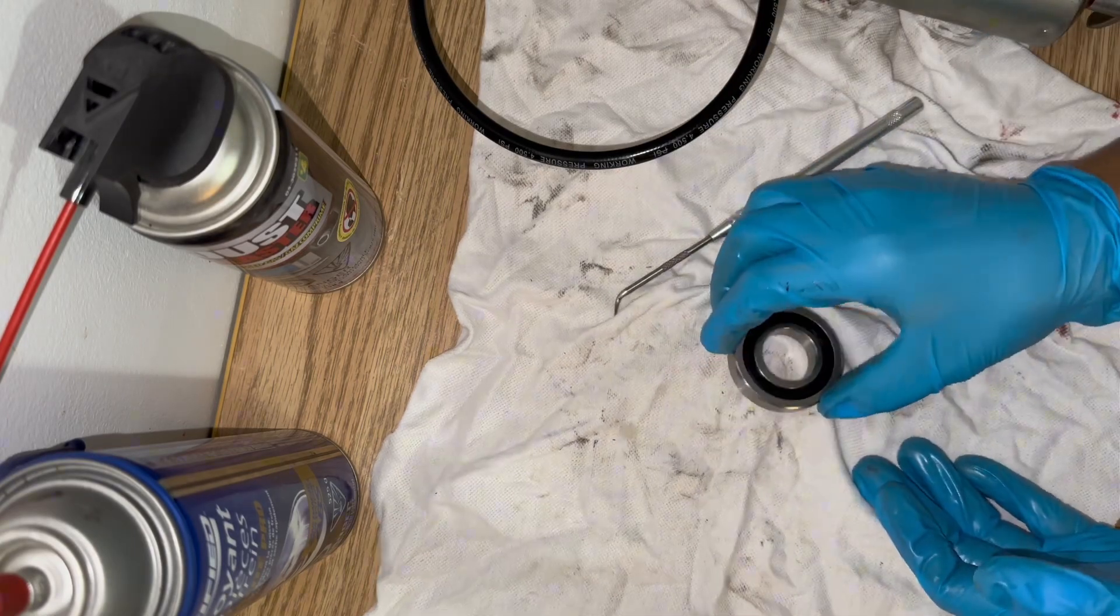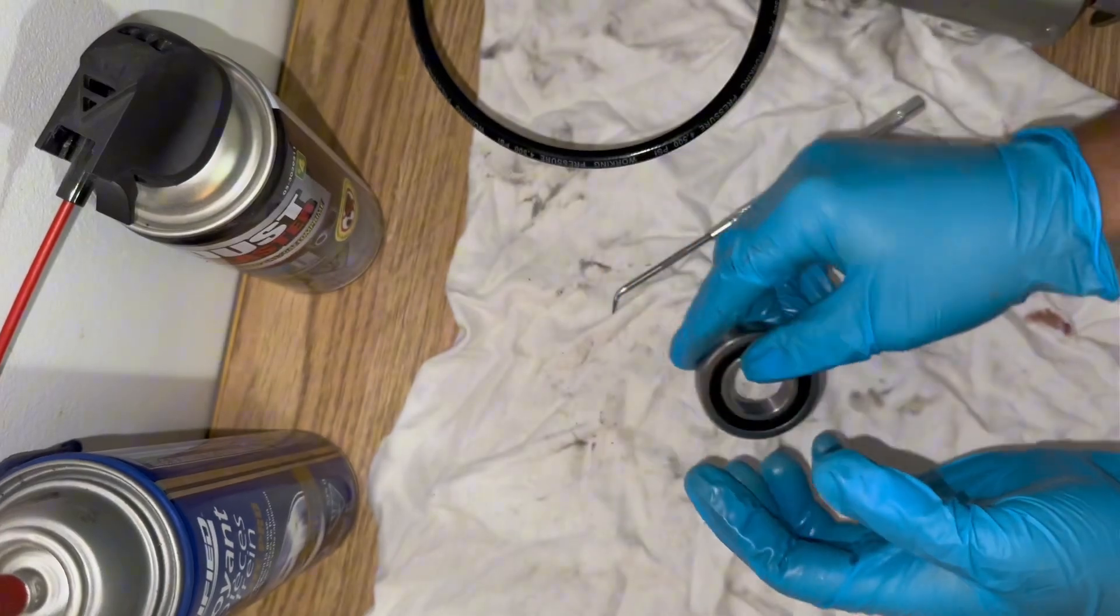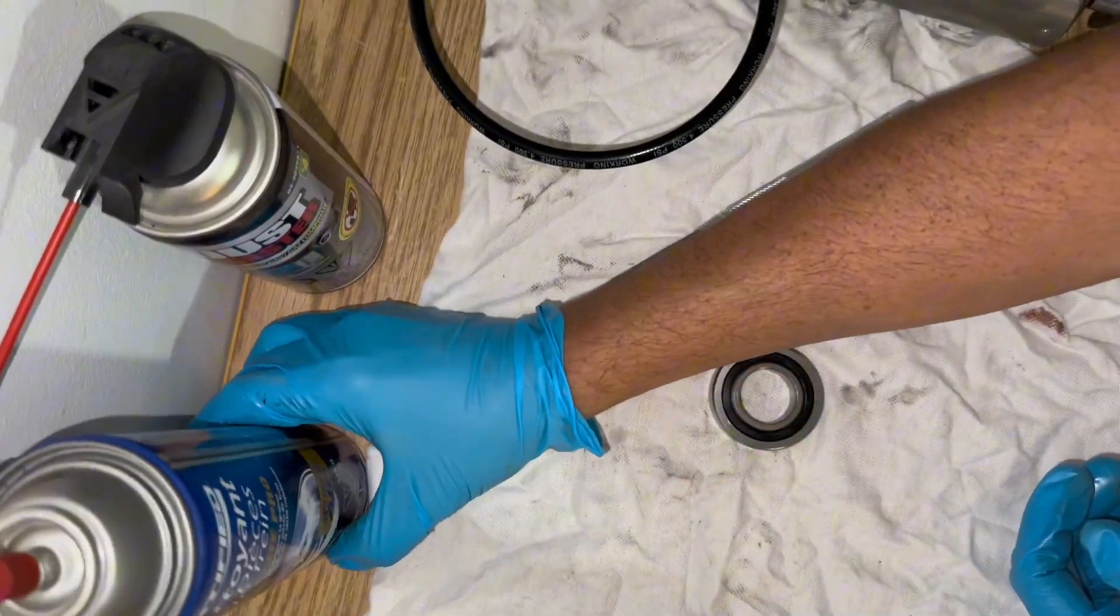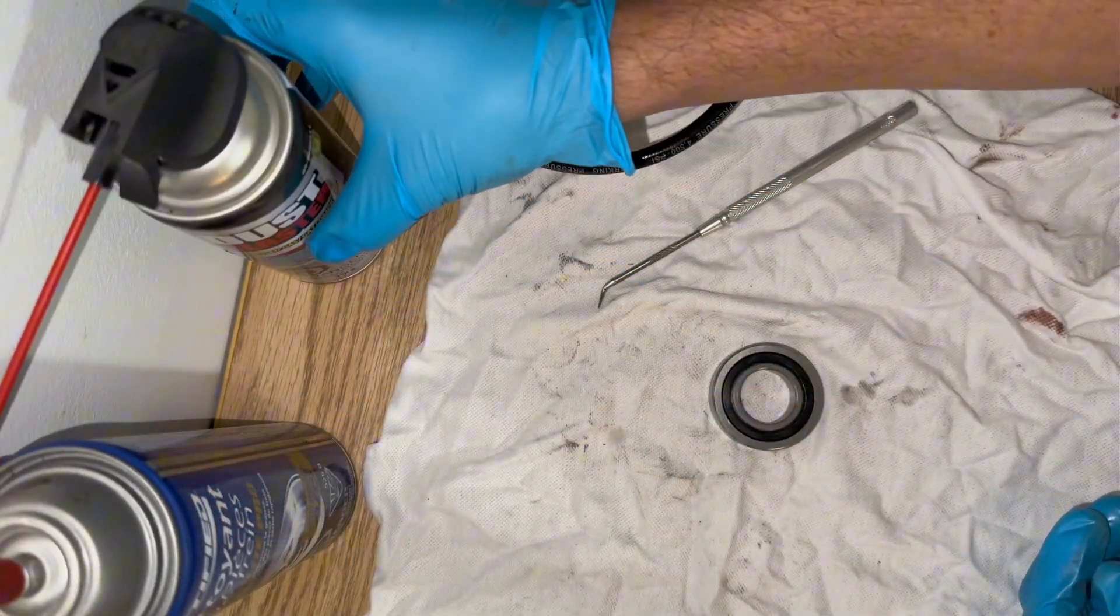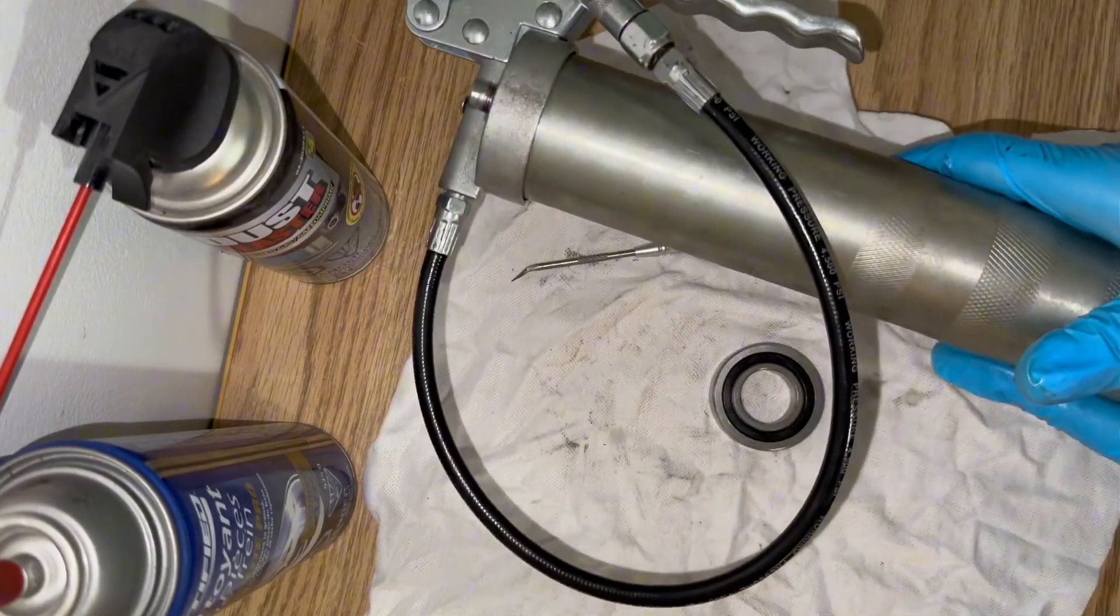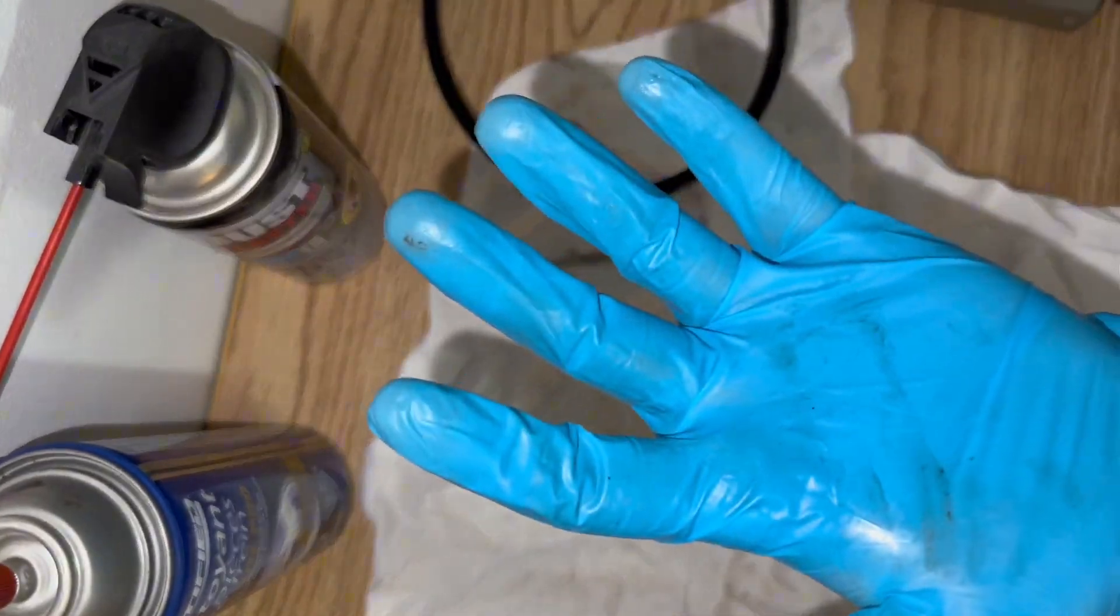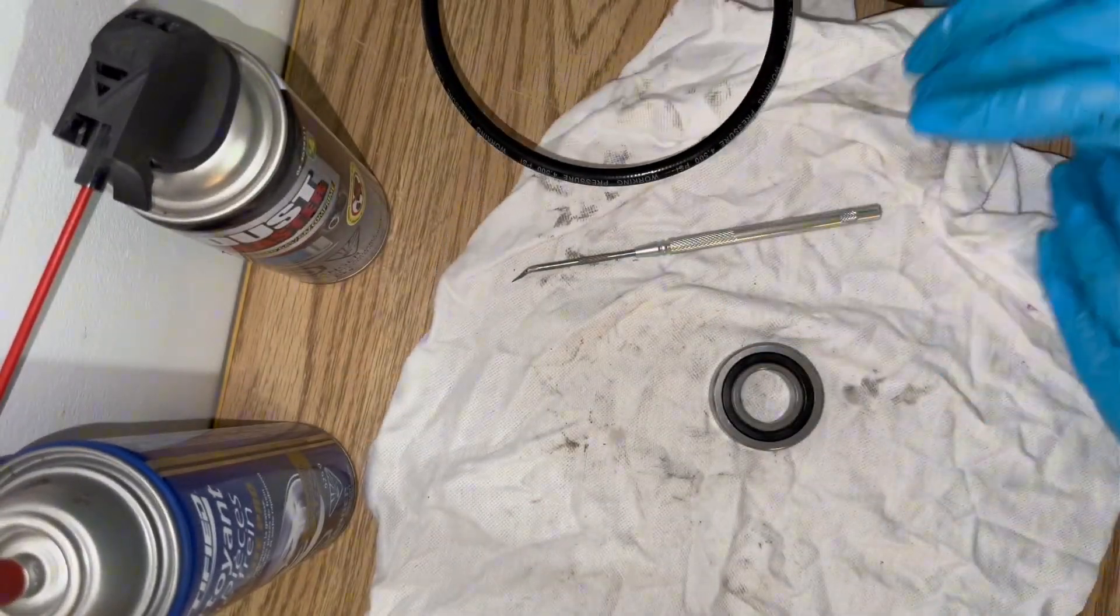Hey there folks, in today's video I'm going to be showing you how to properly clean and re-grease a sealed ball bearing. To do so, we're going to be using brake cleaner, a can of compressed air, a pick, and a grease gun loaded with the specific grease that you need for your particular bearing. And of course, we're going to wear gloves since we're using chemicals here.